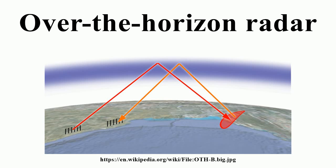A second system was set up in Siberia, also covering the continental United States as well as Alaska. In early 2014, the Russians announced a new system called Container, that was to see over 3,000 kilometers.